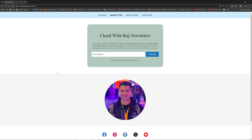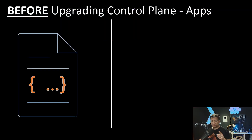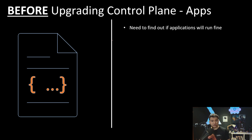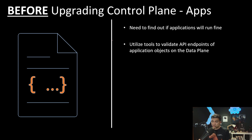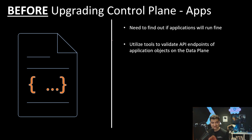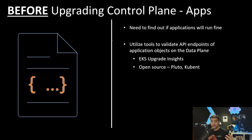Before upgrading the control plane, you need to find out if your applications will run fine. You need to utilize tools to validate the API endpoints of application objects on the data plane — tools that will scan all running objects and deployments, find out what APIs they are using, and determine whether anything will break if you go to the next version. You could use the AWS-native EKS Upgrade Insights, which can tell you what APIs will be breaking.